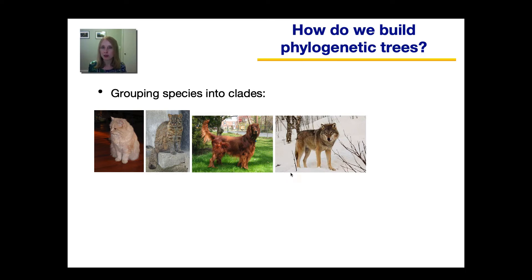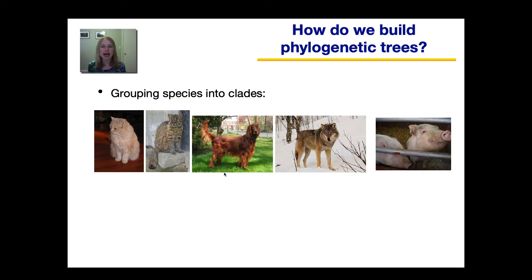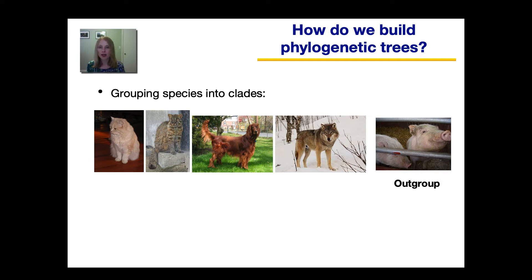Clades can be nested within bigger clades. If you compared all four of these animals to another animal, such as a pig, you might notice that the cats, the dog, and the wolf share more similarities with each other — such as being carnivores — than they do to a pig. This pig could be considered an outgroup, and I'll come back to this term later. So to summarize: the two cats could be one clade, the dog and the wolf could be another clade, and all four of them together could be one bigger clade that's distinct from our outgroup, the pig.